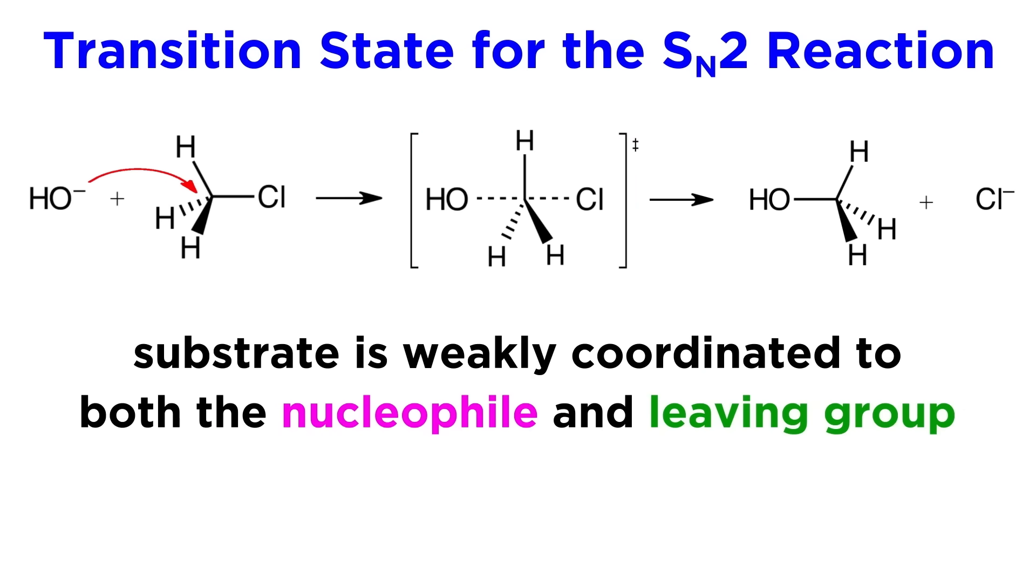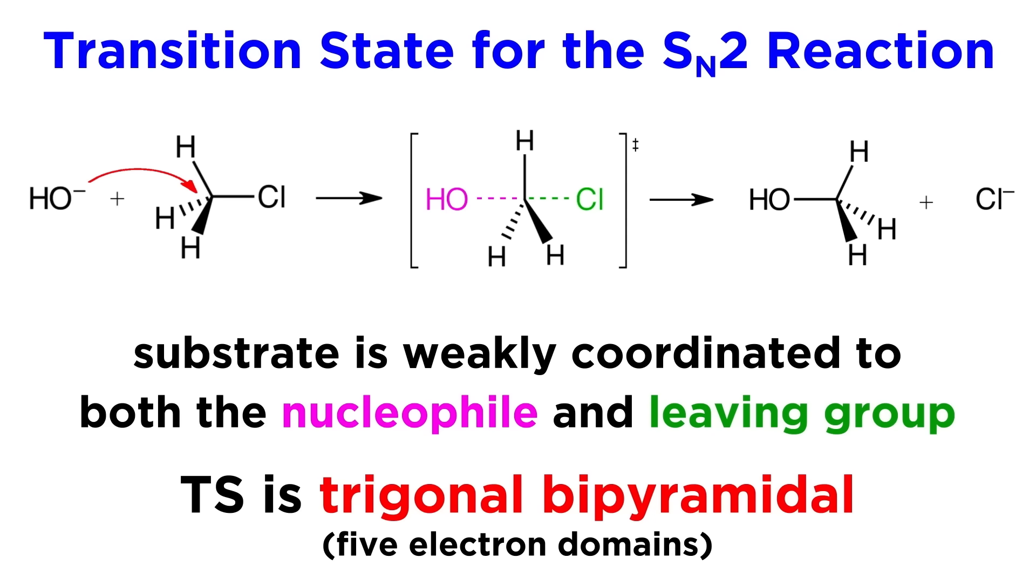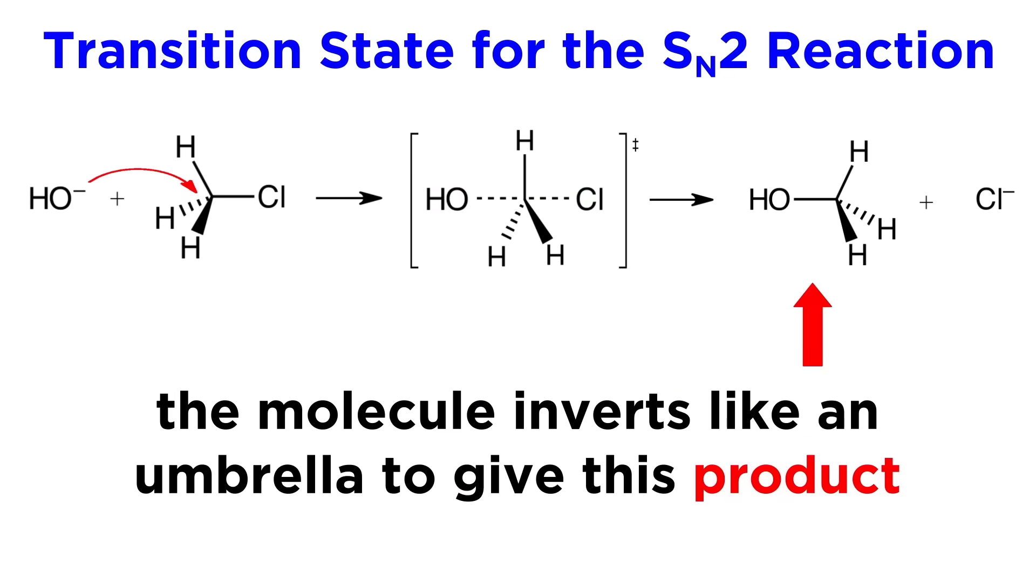In this case, what we mean by a bimolecular transition state is that the substrate will be weakly coordinated to both the nucleophile and leaving group at the same time. We can see by this dotted line that a bond begins to form between oxygen and carbon, just as the bond between carbon and chlorine is beginning to dissipate. The nucleophile is pushing the molecule this way, which is why the transition state has this roughly trigonal bipyramidal geometry for just an instant, given the brief coordination of 5 electron domains.